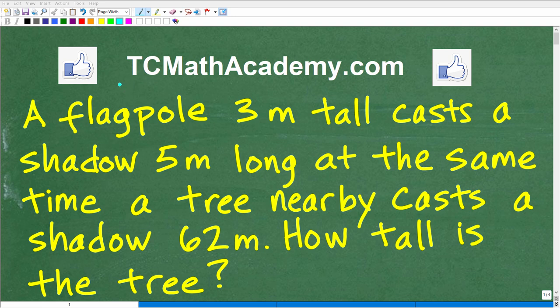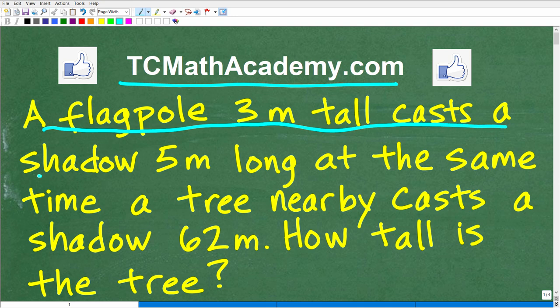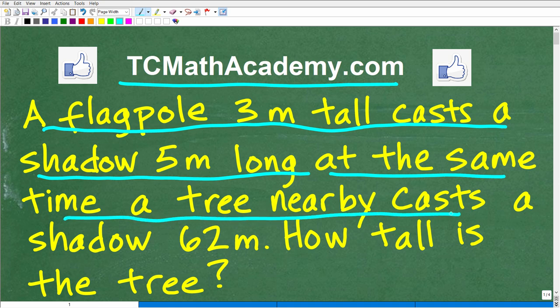Hello, this is John from TC Math Academy, and what I have for you here is a lovely geometry word problem. Let me go ahead and read the problem to you. It says a flagpole is 3 meters tall and it casts a shadow 5 meters long. Now at the same time, there is a tree nearby this flagpole, and it casts a shadow of 62 meters. So how tall is the tree?